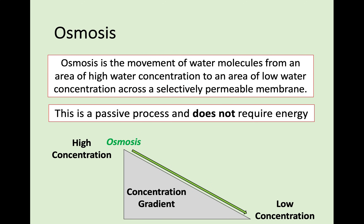The second form of transport across the membrane is almost exactly the same as diffusion, but it involves the movement of water molecules. As soon as we're talking about water molecules, it is osmosis. Osmosis is the movement of water molecules from an area of high water concentration to an area of low water concentration, across a selectively permeable membrane. Again, this is passive — it goes down the concentration gradient and does not require any energy.